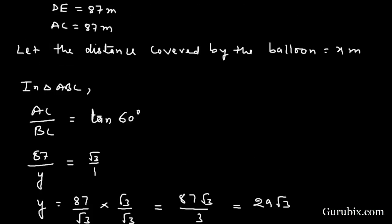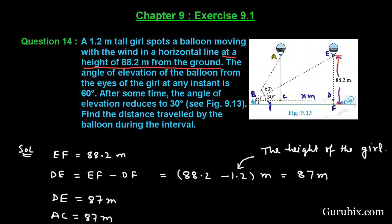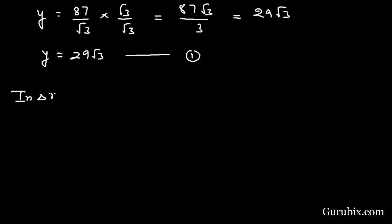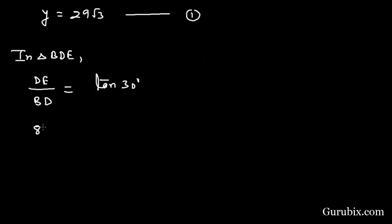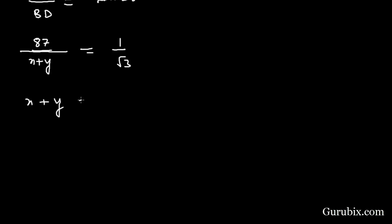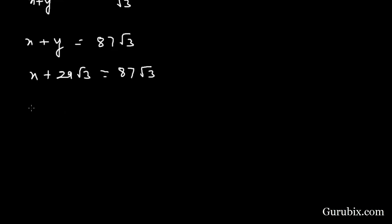Now in triangle BDE, we find the ratio DE over BD which equals tan 30 degrees. DE is 87 and BD equals X plus Y. Tan 30 equals 1 over root 3, so X plus Y equals 87 root 3. Substituting Y equals 29 root 3: X equals 87 root 3 minus 29 root 3.